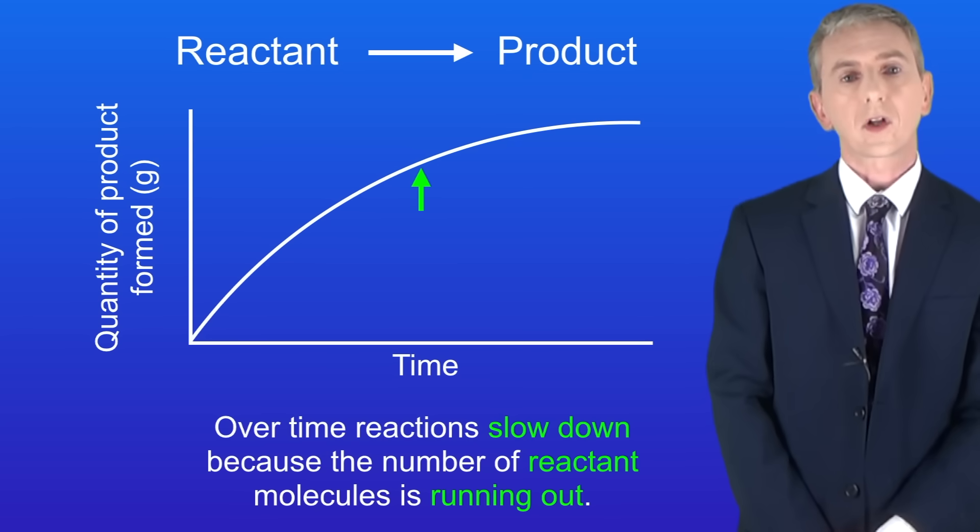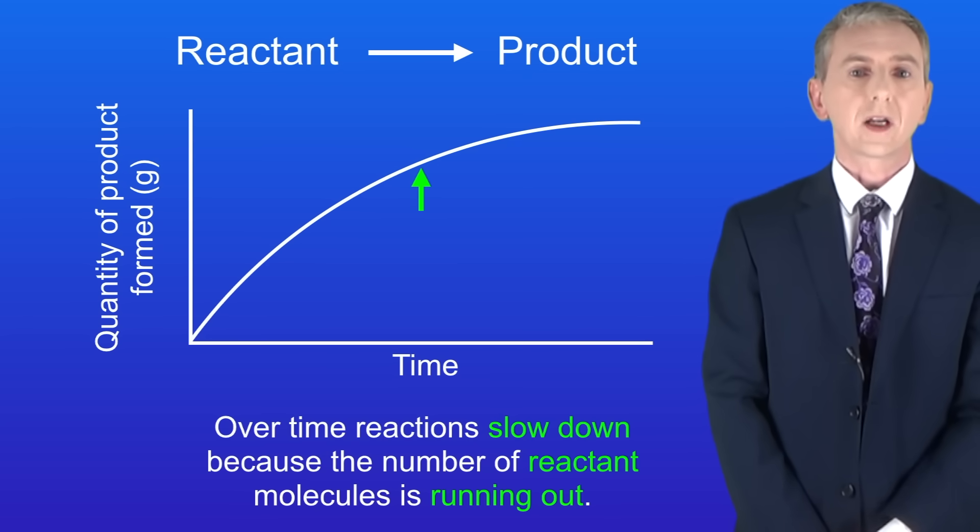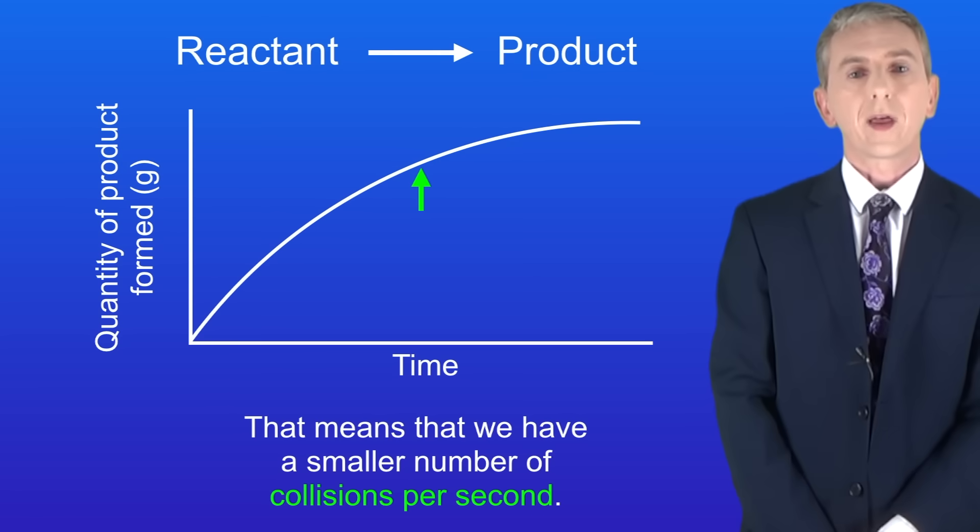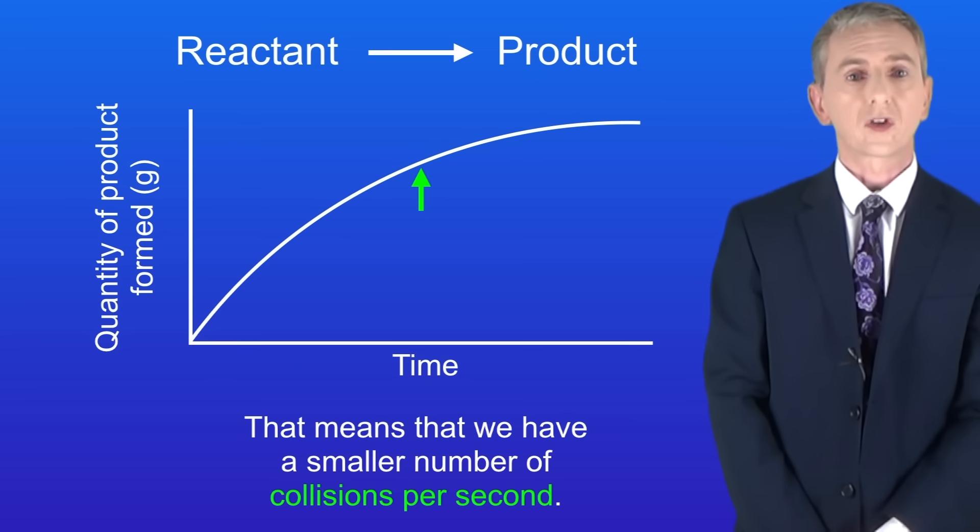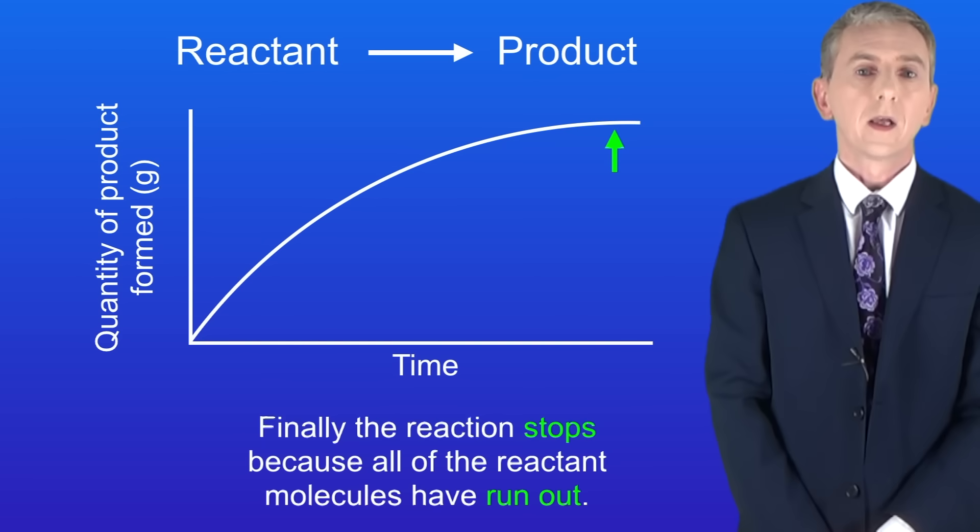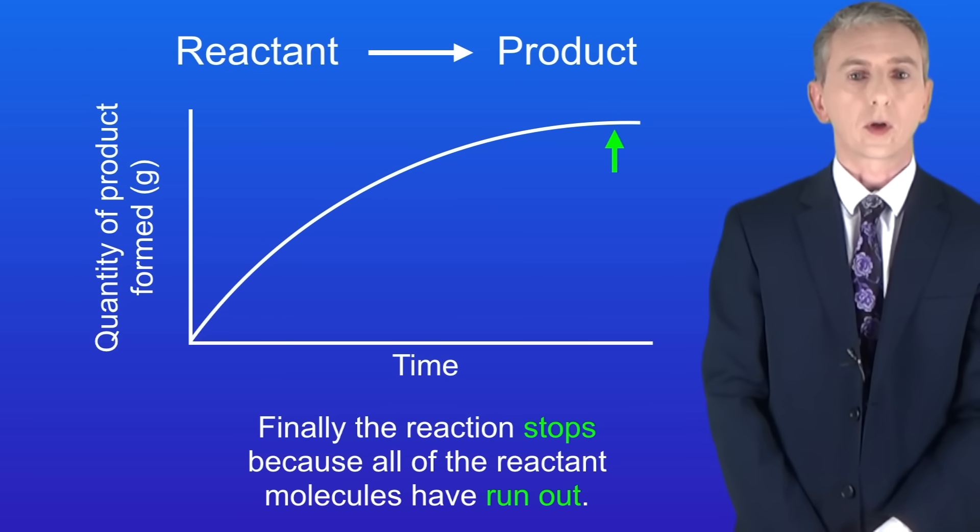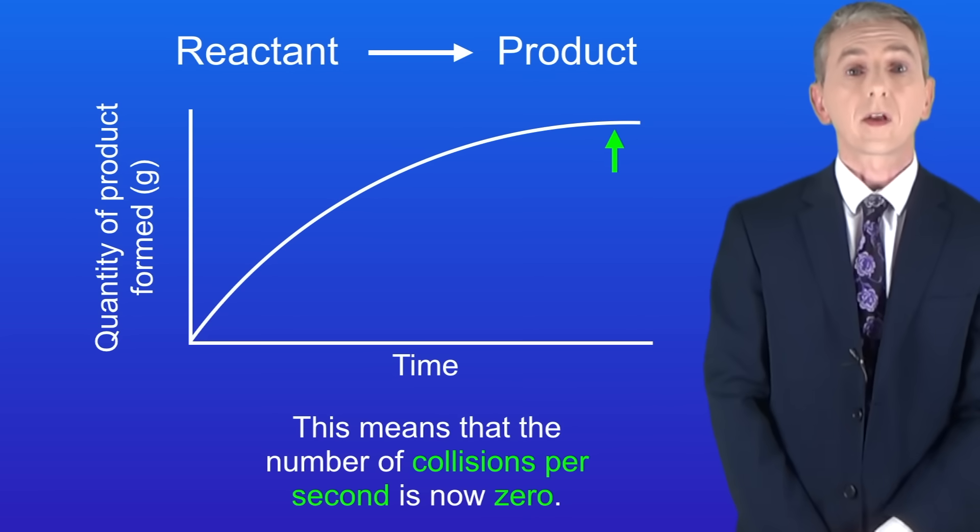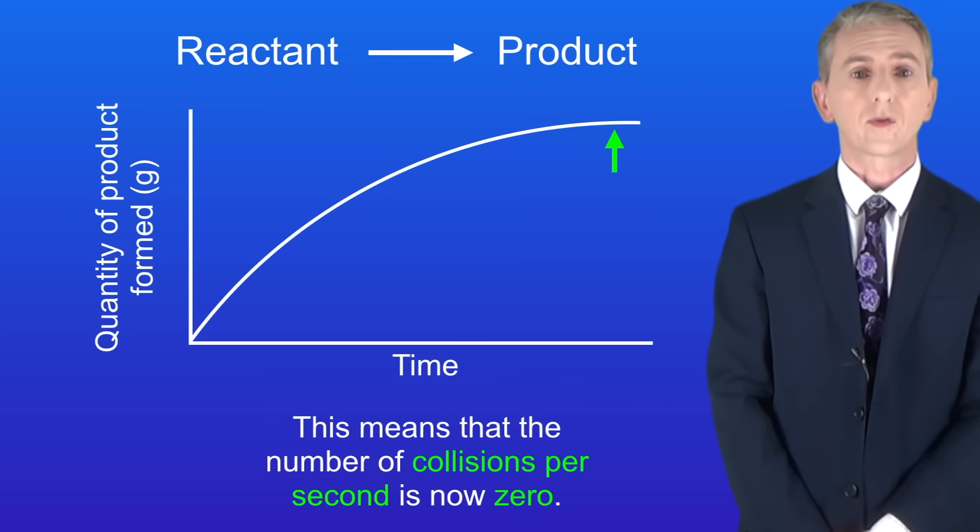Over time reactions slow down because the number of reactant molecules is running out. That means we've got a smaller number of collisions per second. Finally the reaction stops because all of the reactant molecules have run out. This means that the number of collisions per second is now zero.